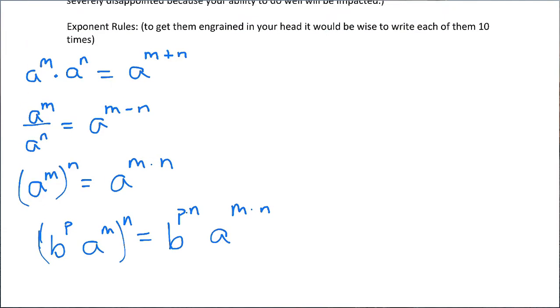If you have a to the zero power, that's always equal to one. Then, if we have a to the negative m, that's the same thing as one over a to the m. Similarly, if we have one over a to the negative m, that's the same thing as a to the m. So we can move that around.